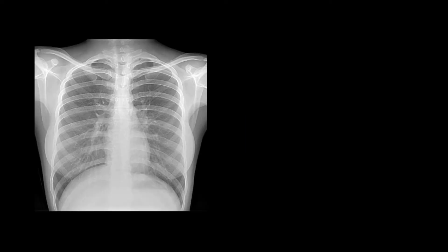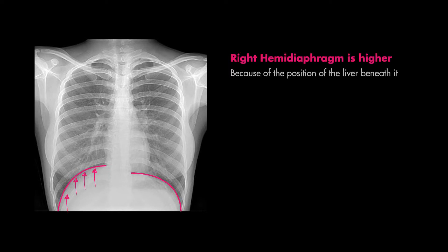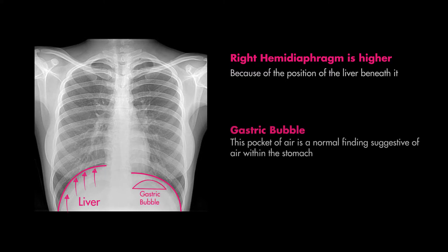When assessing the diaphragms you want to make note of their shape and position. Remember that the right hemidiaphragm is higher than the left due to the position of the liver underneath it. On the left side lies the stomach, and sometimes you'll be able to see an air bubble like you do here. This is a gastric bubble representing air in the stomach, or sometimes even the colon depending on its position within the peritoneum.